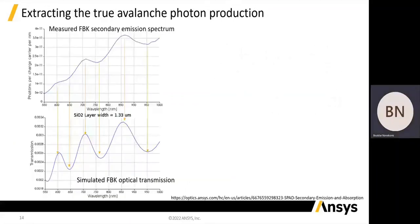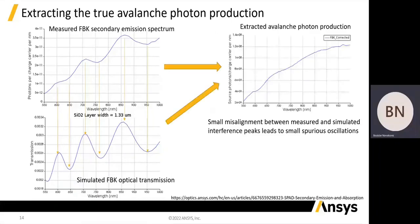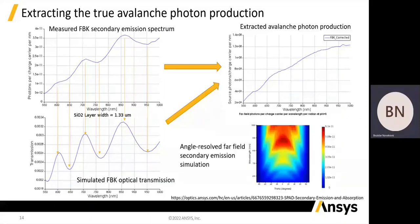Finally, by using the simulated transmission to correct the measured secondary emission spectrum, we can extract the true avalanche photon production spectrum. The extracted spectrum shows small spurious oscillations, which are a consequence of a slight mismatch between the interference peaks in the measured and simulated results. After taking into account the true photon production spectrum, we can repeat the simulation to produce an angle-resolved far-field secondary emission. This result is important for modeling the external optical crosstalk between two SPAD arrays facing each other.